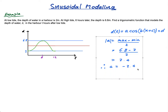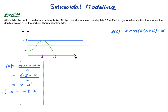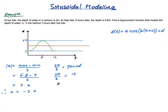Next, let's find b. The rule is 2π / b = period. The period is 12 hours, so 2π / b = 12. Rearranging gives b = 2π / 12 = π / 6. So b = π/6.